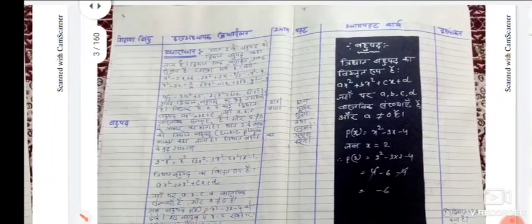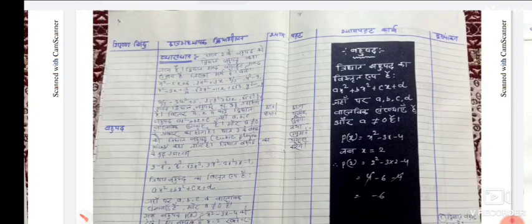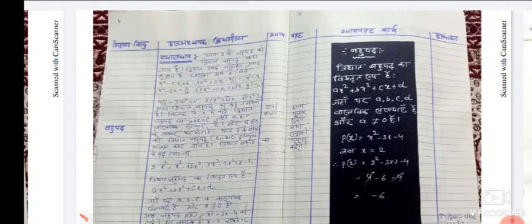Next, on the next page you will again make columns — five columns again: sikshan bindu, chatra adhyapak/adhyapika kriyashilan, chatra sambhavit uttar. Here there may be some mistakes — after chatra adhyapika kriyashilan the next topic will appear at the top.